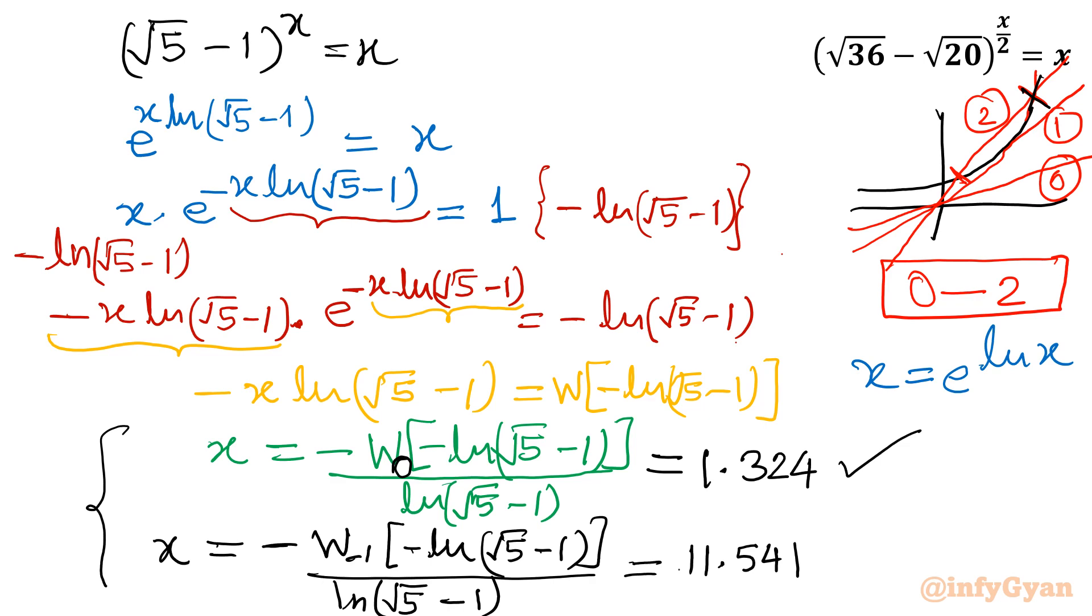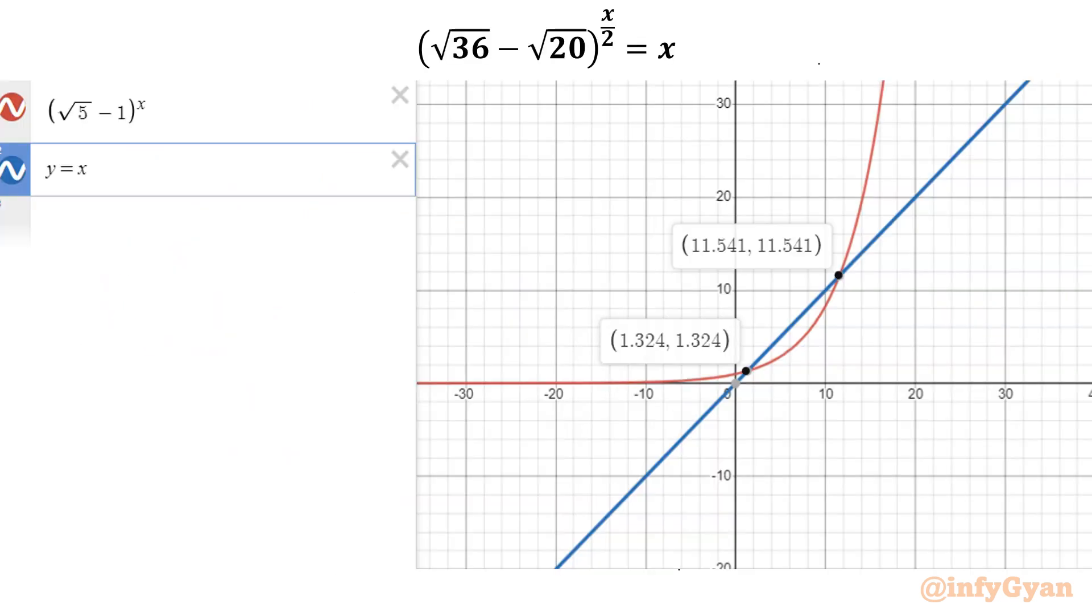Let's see the graph also. See, this is the graph of root 5 minus 1 power x. And blue color is y equal to x. There are two intersection points because the line and exponential function are intersecting. It is not touching, it is intersecting each other. So that means two solutions must be there. The maximum solution would be two. So this is how we will attempt this problem.